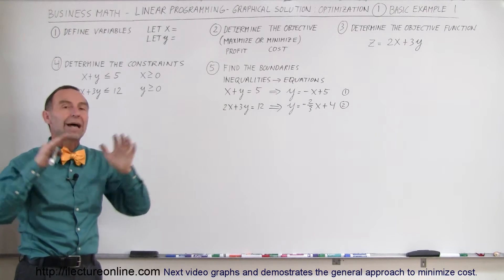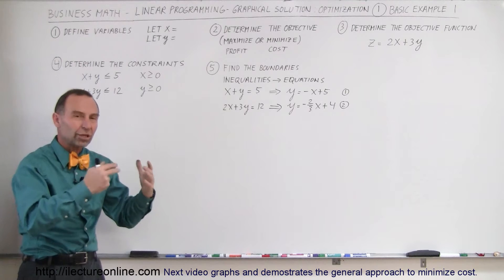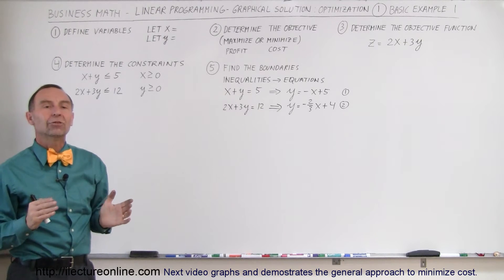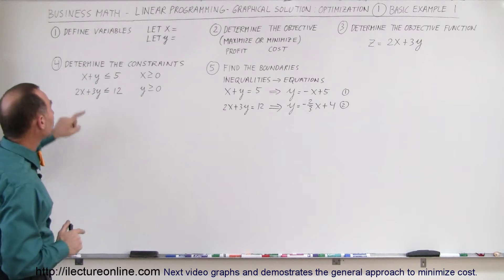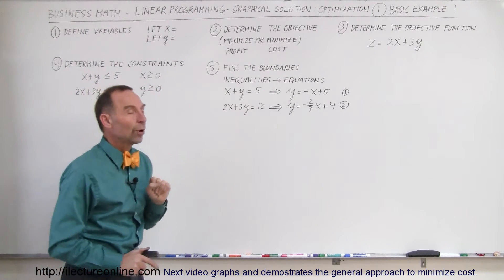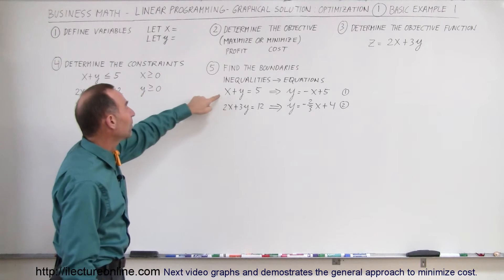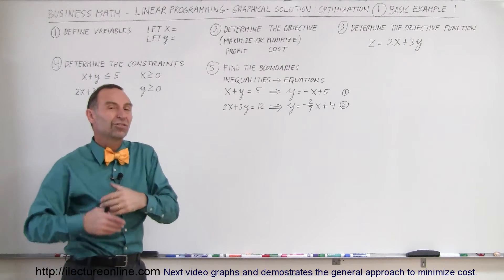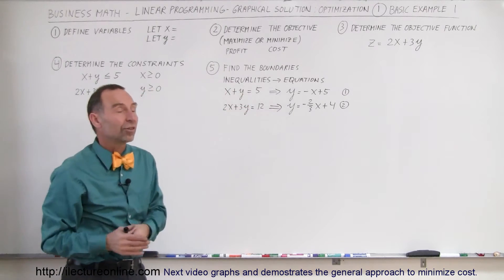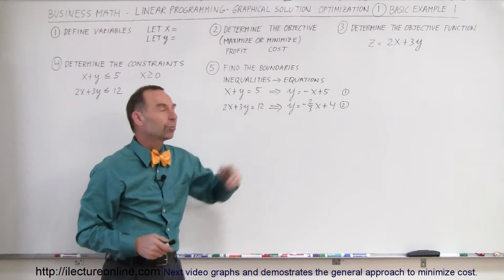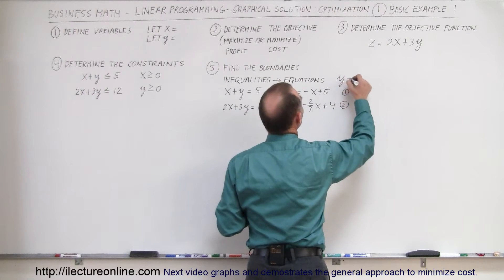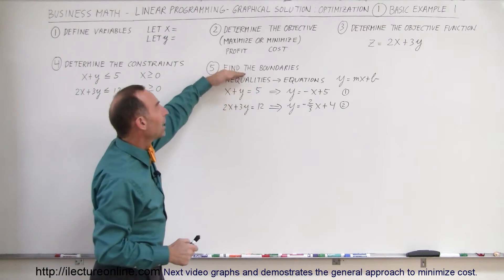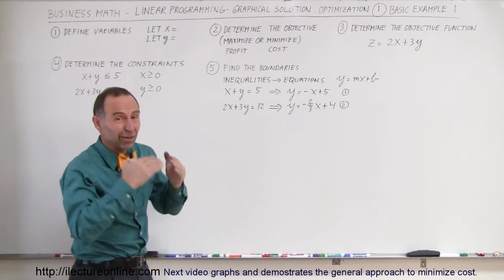The next step is to find the boundaries of your graphical constraints. We're going to get a region on the x-y plane in the first quadrant where we can operate. To find the boundaries, we take the inequalities and turn them into equations: x plus y equals 5, and 2x plus 3y equals 12. Then we write those equations in y equals mx plus b format so we can graph them as the boundaries of the region of interest.